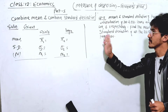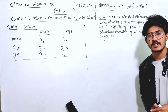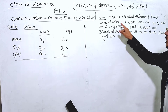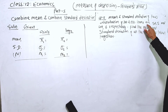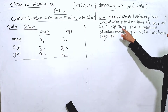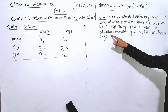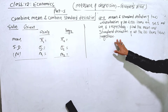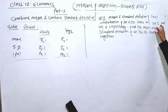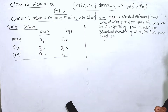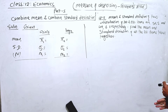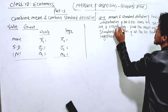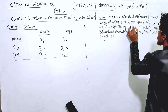Question number 2: The mean and standard deviation of two distributions of 100 and 150 items are 50, 5 and 40, 6 respectively. Find the mean and standard deviation of all 250 items taken together.